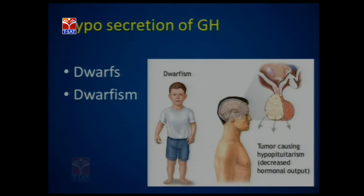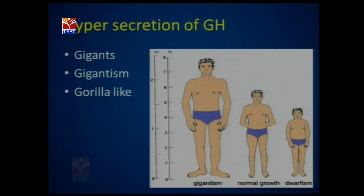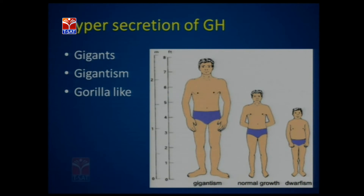Hypersecretion means release of the hormone in large quantities in overactive conditions. Due to oversecretion of growth hormone, individuals undergo gigantism, also called pituitary gigantism, and the individuals are called giants. The symptoms of gigantism include the person growing very tall, limbs growing very large, and the thyroid gland and adrenal glands becoming very active. Here is a picture showing the differences between a normal person and a person suffering with gigantism.